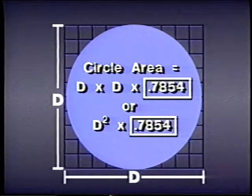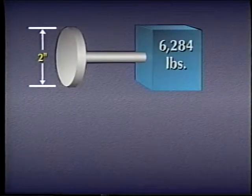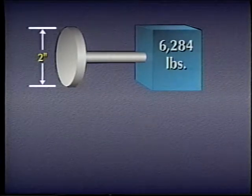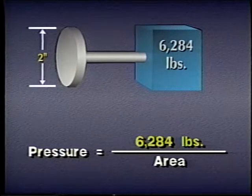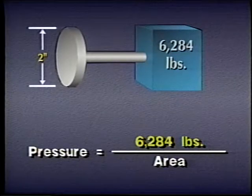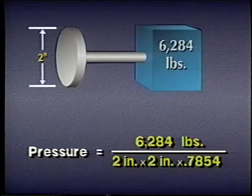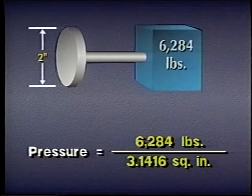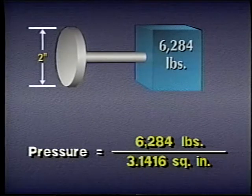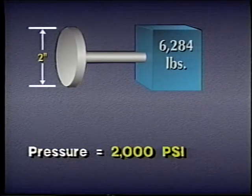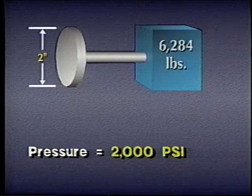The .7854 in this formula is called a constant. For example, suppose we have a 6,284-pound load that has to be moved by a cylinder with a 2-inch bore. To calculate the pressure required, we divide 6,284 pounds by the area of the piston. That area is 2 inches times 2 inches times .7854, or 3.1416 square inches. 6,284 pounds divided by 3.1416 square inches equals 2,000 PSI. To move the load, the hydraulic system must operate at a pressure of 2,000 PSI.